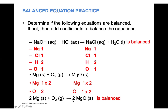What I want you to show is only the final equation with correct coefficients in front of each element or compound — in front, never between the two elements. The coefficient 2 in front of MgO belongs to both Mg and O: it multiplies one Mg giving 2 Mg and one O giving 2 O.